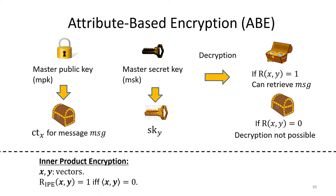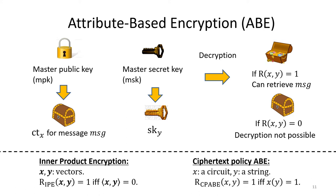The first one is inner product predicate. Here, a ciphertext and a secret key are associated with a vector, and the decryption is possible only when they are orthogonal. ABE for this predicate is called inner product encryption. We also consider ciphertext policy ABE, or CP-ABE in short. Here, a ciphertext is associated with a circuit, and the secret key is associated with a string. The decryption is possible if and only if the evaluation result of the circuit x on input y equals to 1.